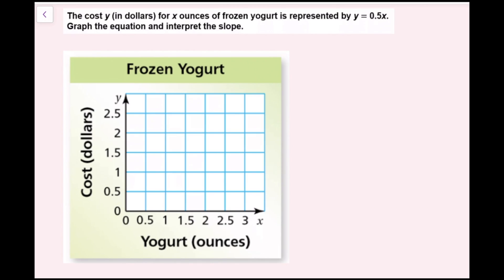The cost y in dollars for x ounces of frozen yogurt is represented by y equals 0.5x. Graph the equation and interpret the slope. First we're going to graph the equation.